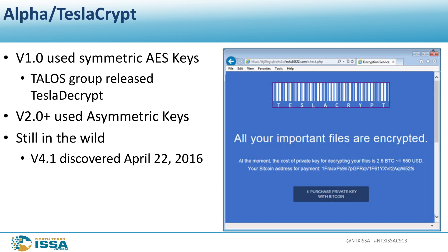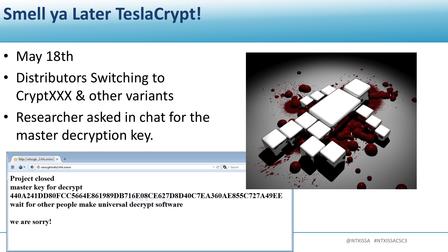TeslaCrypt initially used symmetric encryption — so if you could extract that key or password, you could decrypt your files. The Talos Group was first to discover and publish this. A week later, the hackers got smart and changed to asymmetric encryption. Version 4.1 was still in the wild as of April 22nd. But great news — TeslaCrypt is gone. On May 18th, a researcher got on their chat room and asked if he could have their private key since they were shutting down. They actually responded, 'Yes, sorry.' We were then able to provide decryptors for all versions of TeslaCrypt.